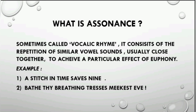Let us understand this literary term assonance, sometimes called vocally rhyme. Assonance consists of the repetition of a similar vowel sound. It is the effect when vowel sounds are repeated in sounds which are close together. The arrangement of vowels is often close together, and in simple words we can say that there is a similarity in vowel sounds of different words in a line — that effect is known as assonance.